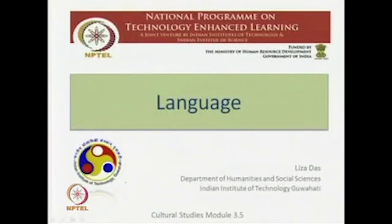We are in module 3, which is entitled 'Sites of Cultural Studies.' We have already looked at four different sites and are now in lecture 5, entitled 'Language.' Language as a site of cultural studies is slightly different from the previous concepts in that it is both a site and something that is constitutive of culture — a very rich site in that sense.